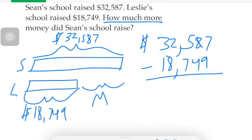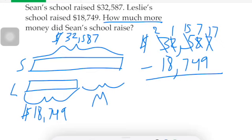I can't do seven minus nine, so I regroup from the seven and turn that into seventeen. I cannot do five minus seven so I will regroup from the two and make that fifteen. I can't do one minus eight so I'm going to regroup from the three in the ten-thousands and make that eleven. Seventeen minus nine is eight, seven minus four is three, fifteen minus seven is eight, eleven minus eight is three, and two minus one is one.